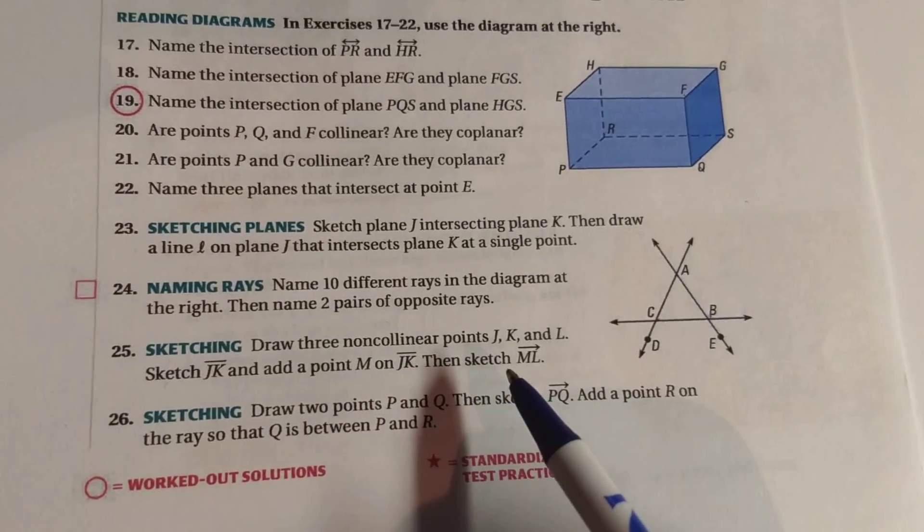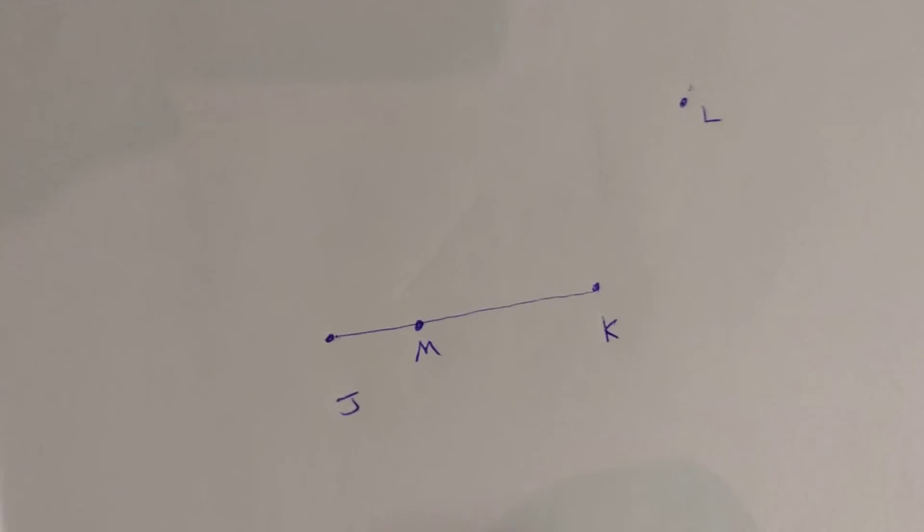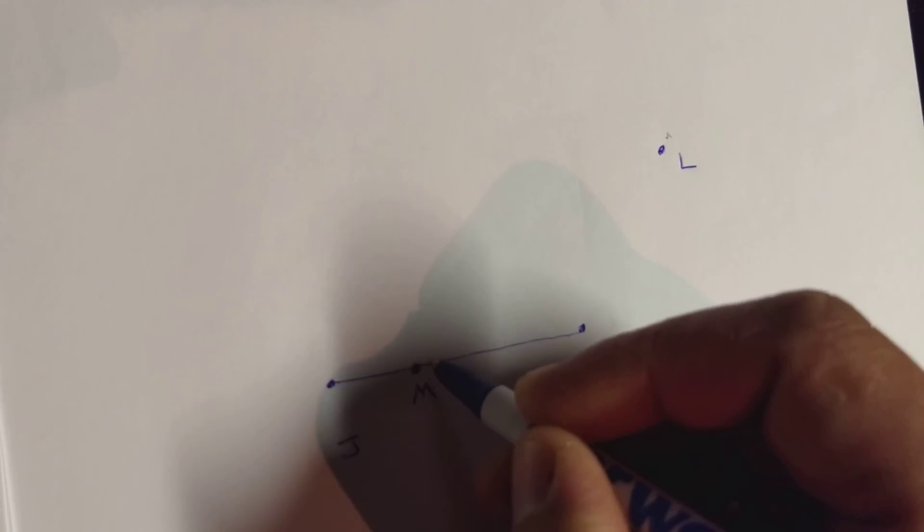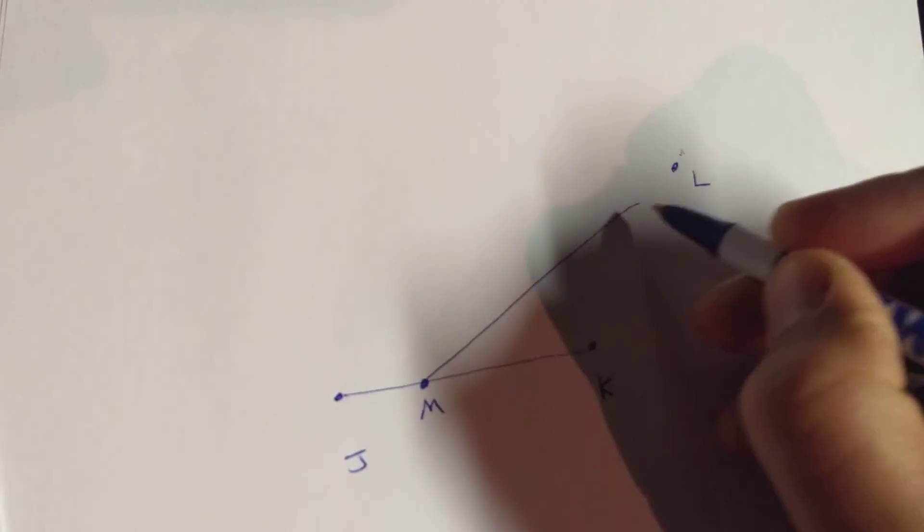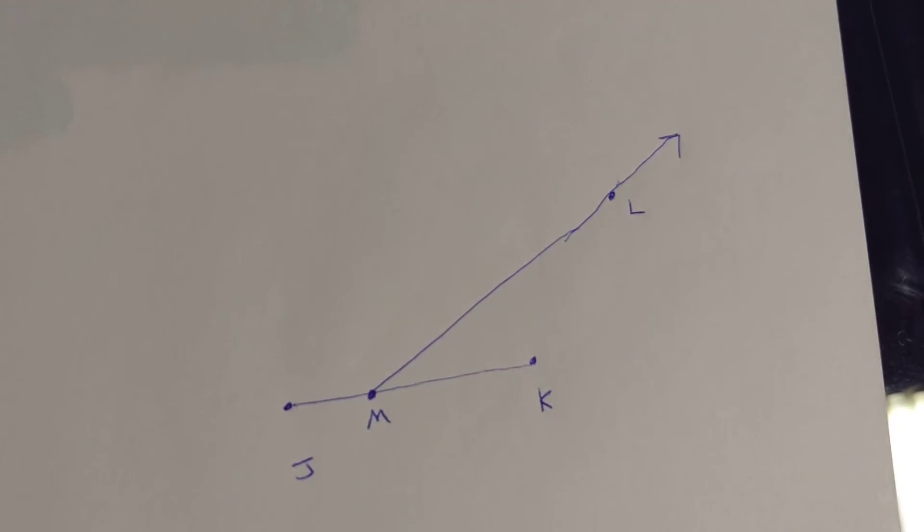And then sketch ray ML. So if I go over here, here's M, here's L, and we want a ray starting at M, going through L, and extending forever in that direction.